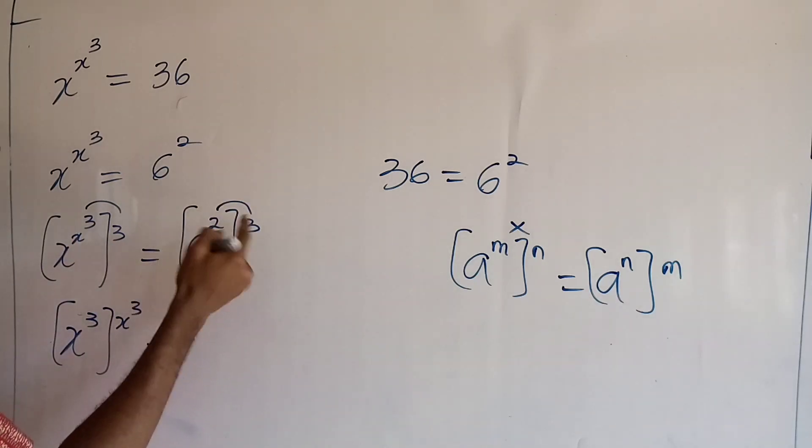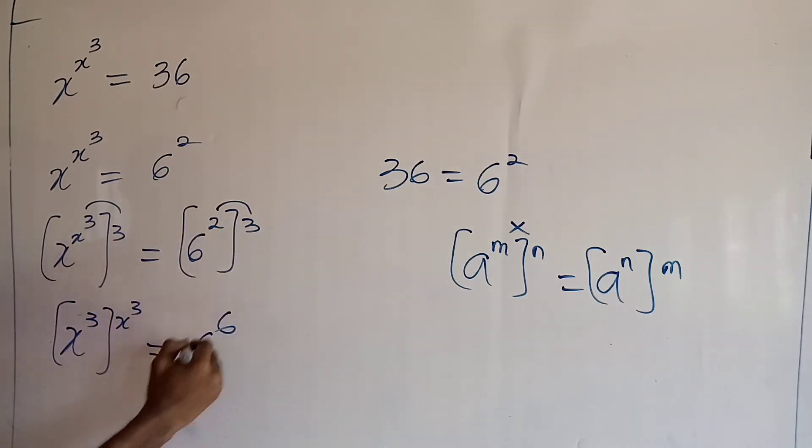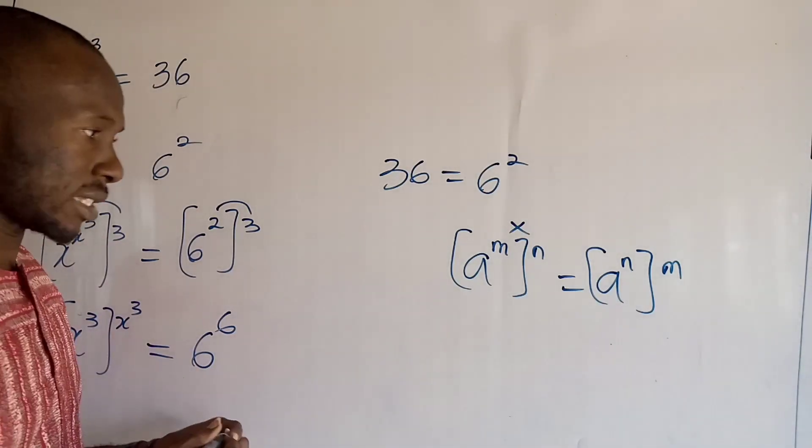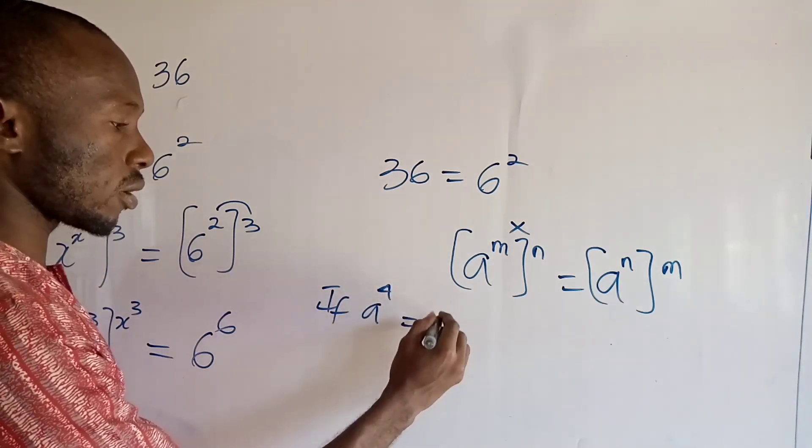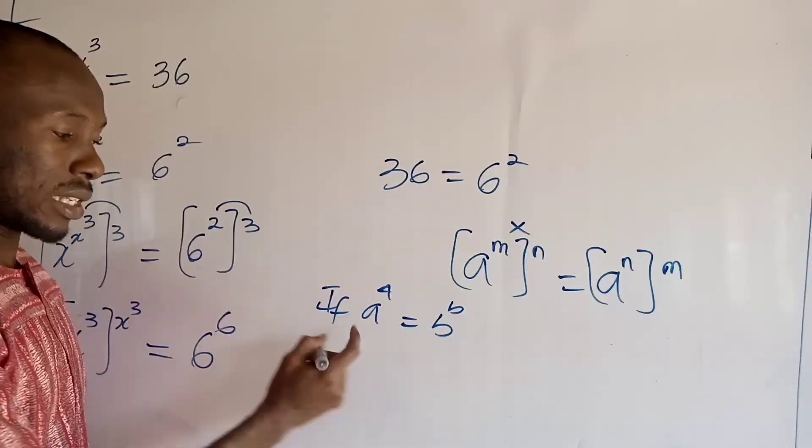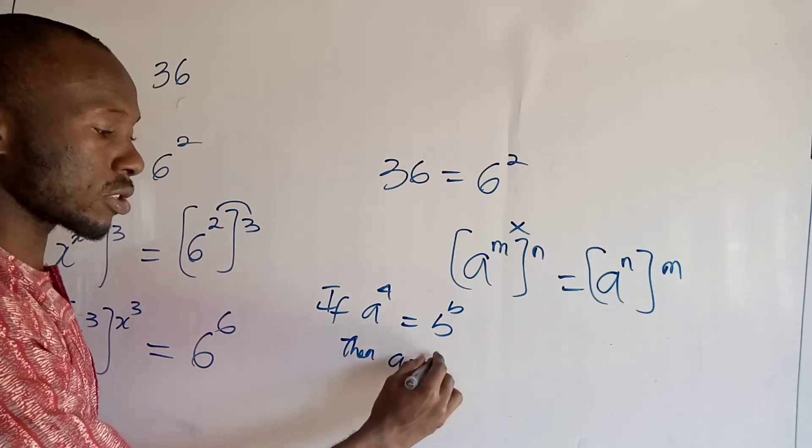They're equal to, of course, 2 times 3 will give me 6^6. Now this is what we want. Remember the condition that says if a^a equals b^b, then a must equal b.